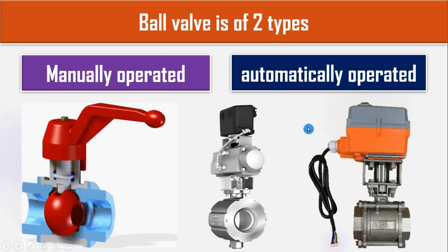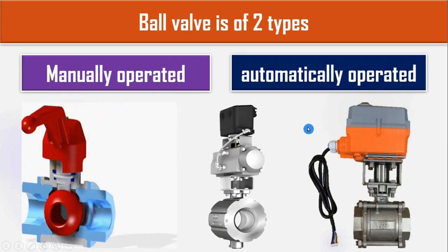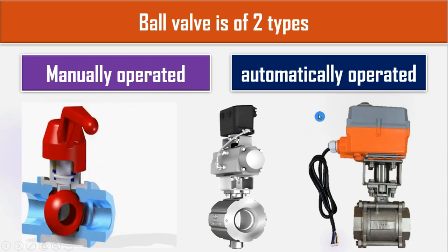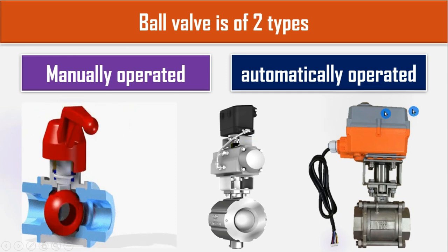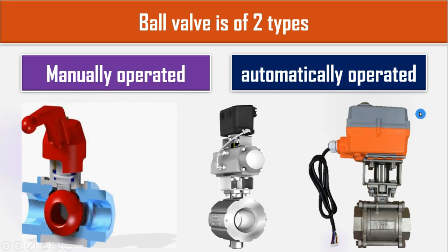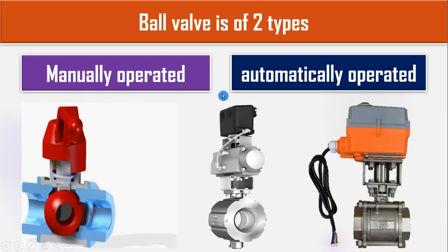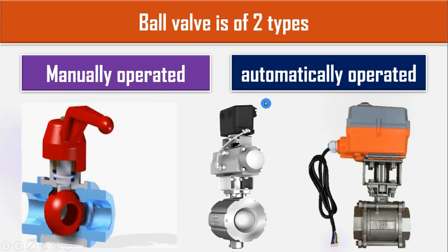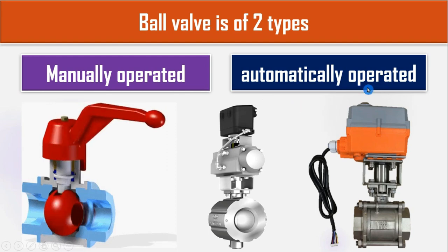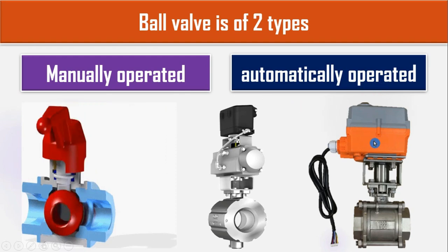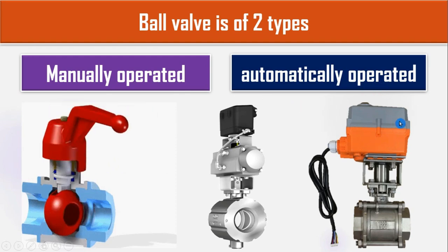The pneumatically operated ball valve is operated by a pneumatic signal and the electrically operated ball valve is operated by an electric signal. That means a pneumatic actuator is used in pneumatically operated ball valves and an electrical actuator is used in electrically operated ball valves.